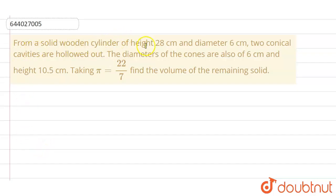From a solid wooden cylinder of height 28 cm and diameter 6 cm, two conical cavities are hollowed out. The diameter of the cones are also 6 cm and height 10.5 cm. Taking π = 22/7, find the volume of the remaining solid.